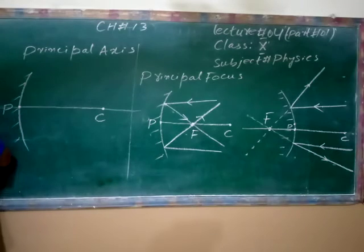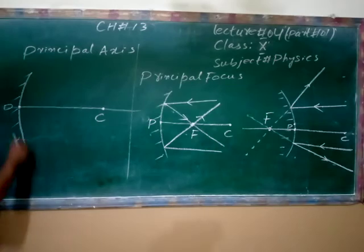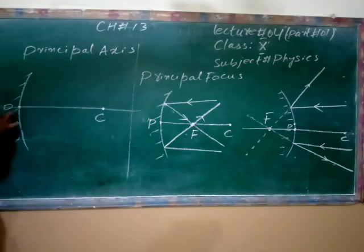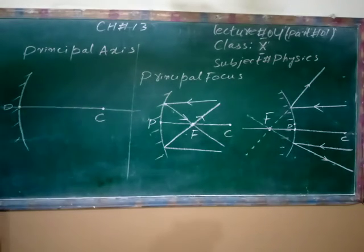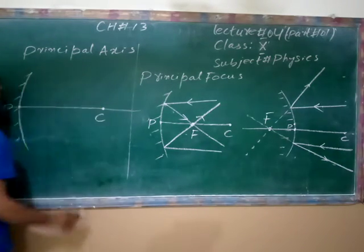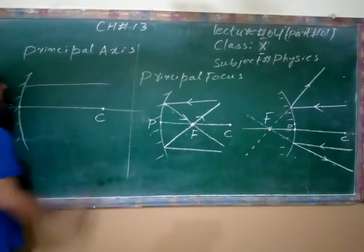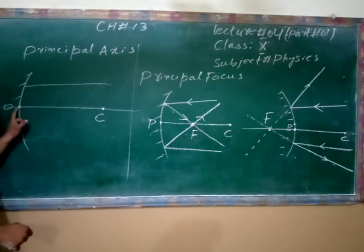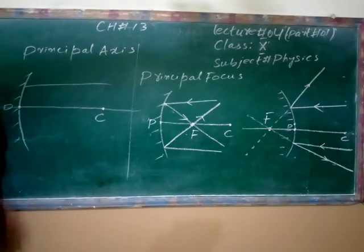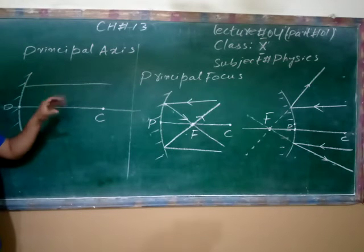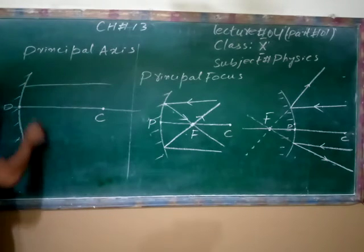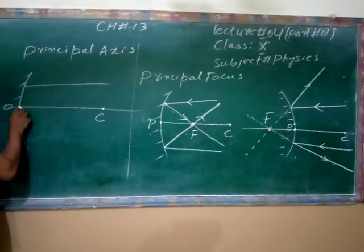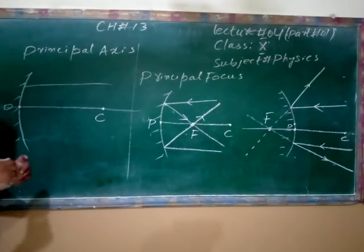The principal axis is a straight line, but this straight line must pass through both the pole of the mirror and the center of curvature. If a straight line does not pass through the pole and the center of curvature, it is just an ordinary axis or line — not the principal axis.